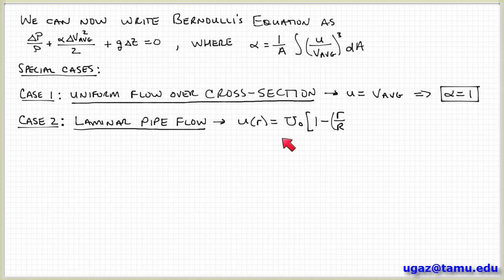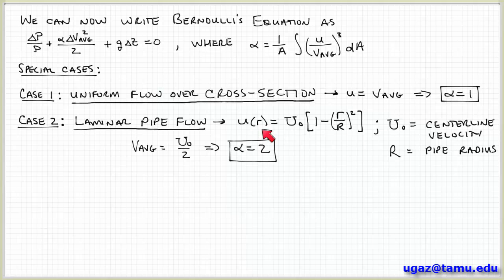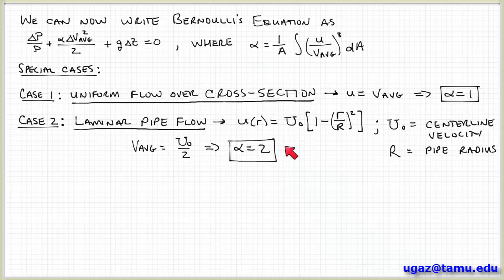The second case is laminar pipe flow. From the Navier-Stokes equations, the velocity profile over the cross-section is: u(r) = u₀ times (1 − (r/R)²), a parabolic velocity profile. The average velocity is u₀/2 — half the centerline value. Substituting this velocity profile and v_average into the equation for alpha and integrating (u/v_average)³ over the cross-sectional area, we find that alpha equals 2 for laminar pipe flow. So the kinetic energy correction factor has a value of 2 for laminar flow.